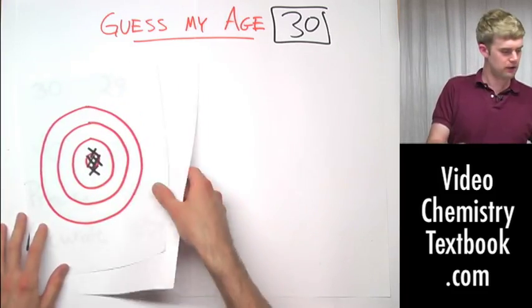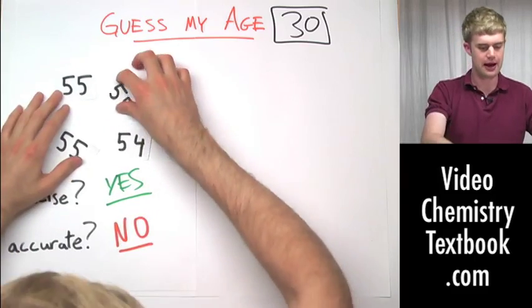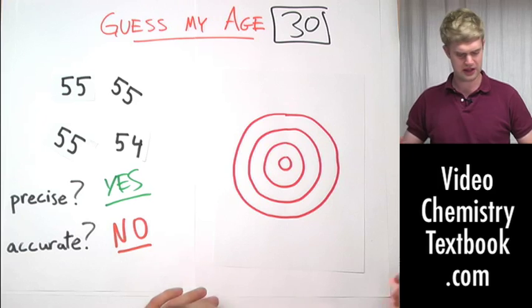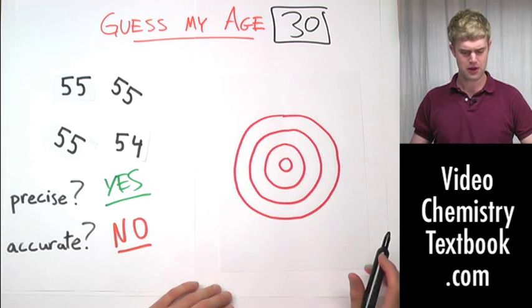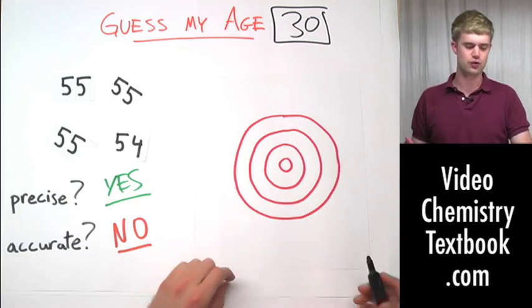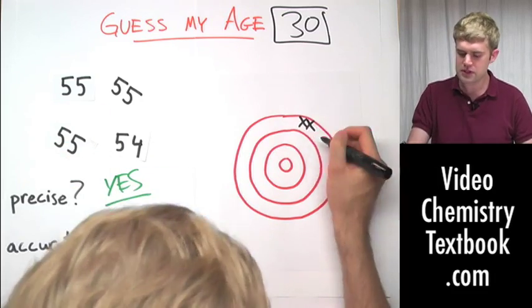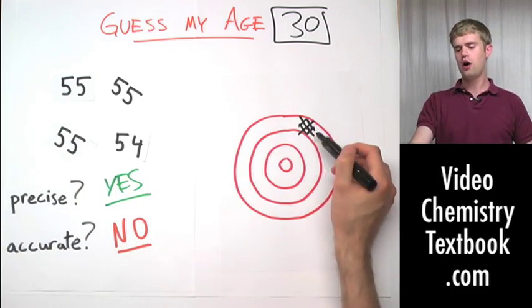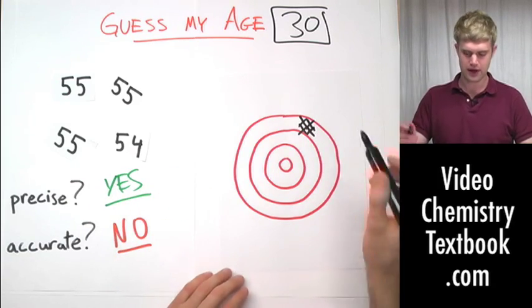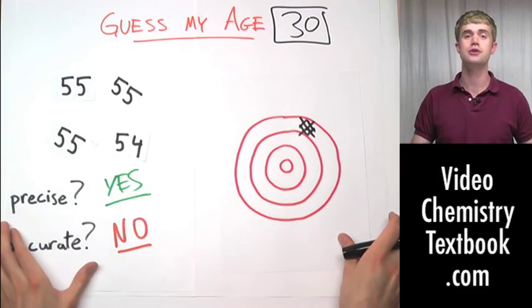So now let's take a look at an example that is precise, but it's not accurate. This was the one where everybody guessed that this guy was in his mid-50s. So if 30, if the target is the actual age, these guys are way off here. Like maybe this is 55. But they're all very close together. So all of our hits are going to be far away from the target, but close together. So here we have accurate, no, nowhere near the center. But precise, yes, because they're all together.